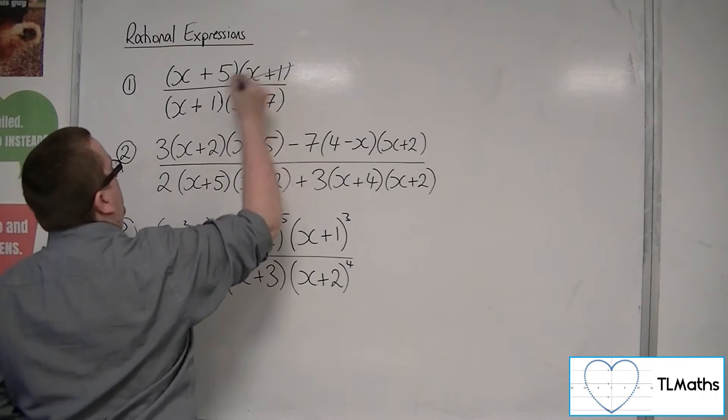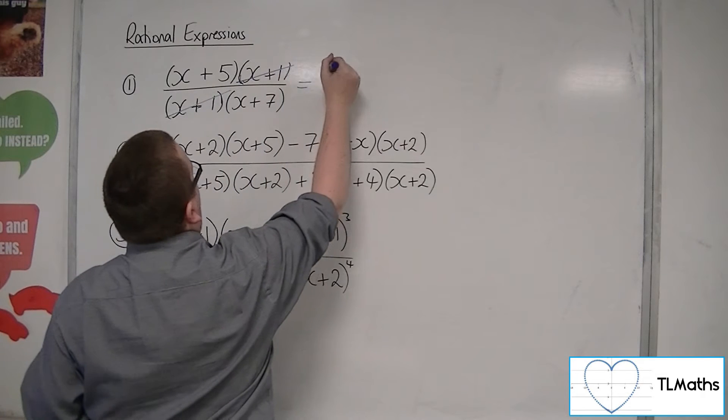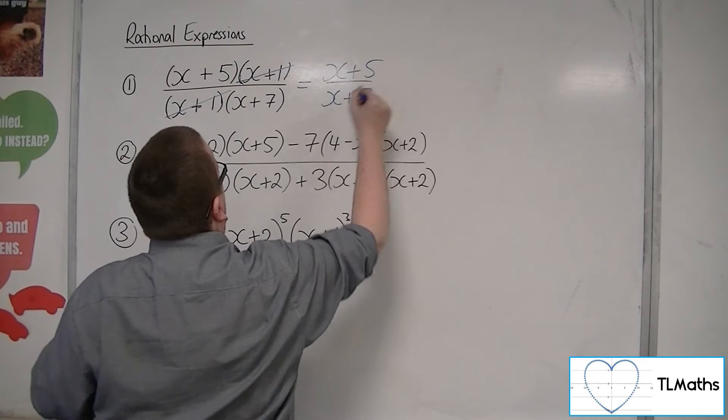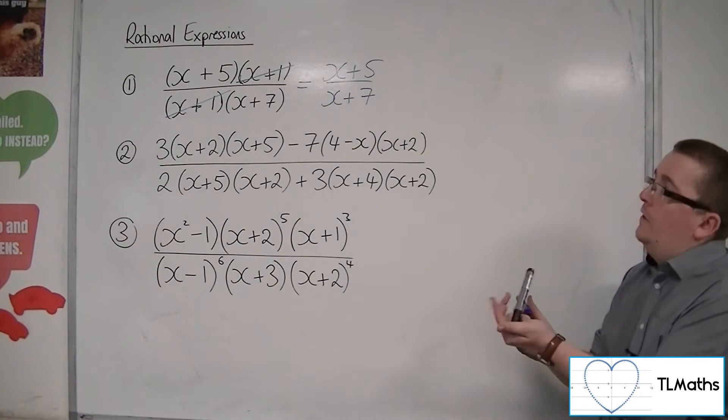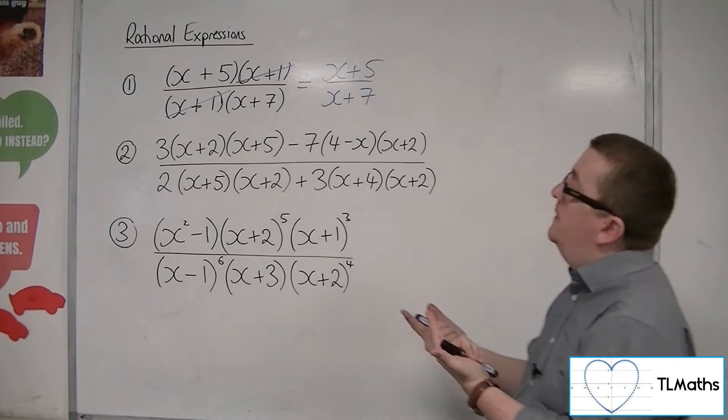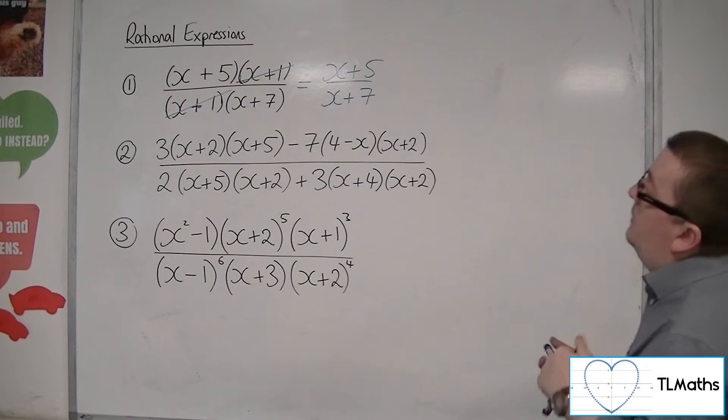So I can cancel the x plus 1s, and I'd be left with x plus 5 over x plus 7. Now the fact that I haven't written the brackets around those doesn't make any difference. It's taken to mean that the brackets are there. You can write the brackets around them if you prefer.